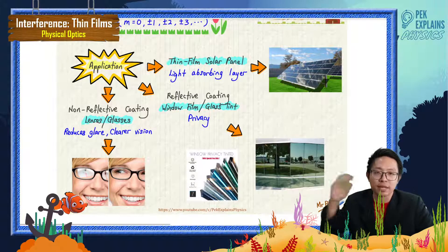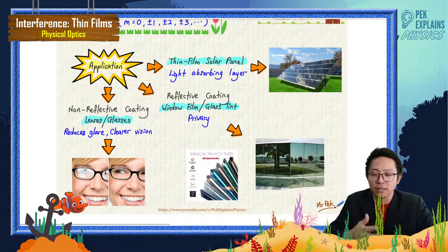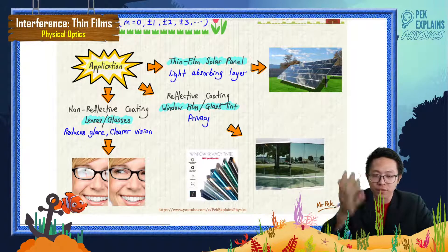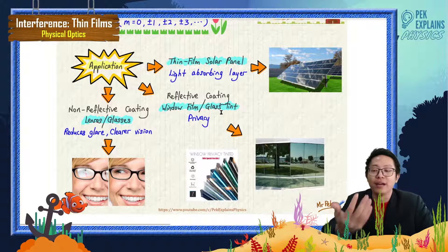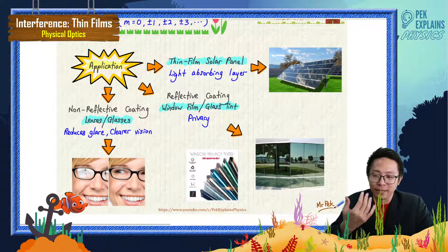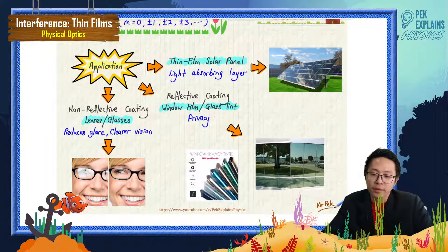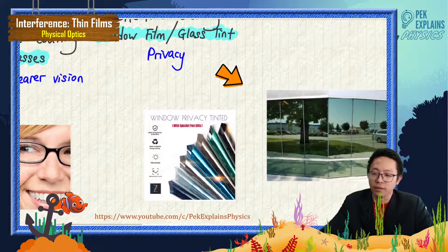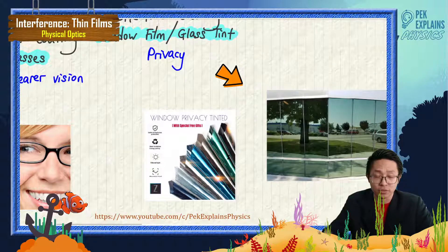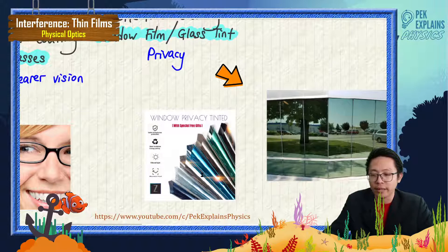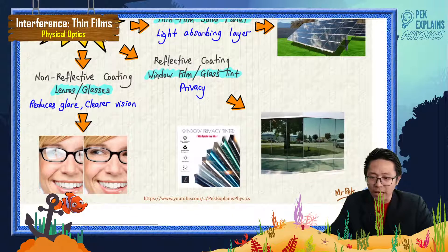Why can't the person outside see into the car? Because you see the reflected light of the surroundings instead — that's the reflective coating at work. This protects the privacy of the person inside, like with tinted glass. Window film comes in different colors: green, blue, and others. You can even buy this from Shopee and DIY on your own window.